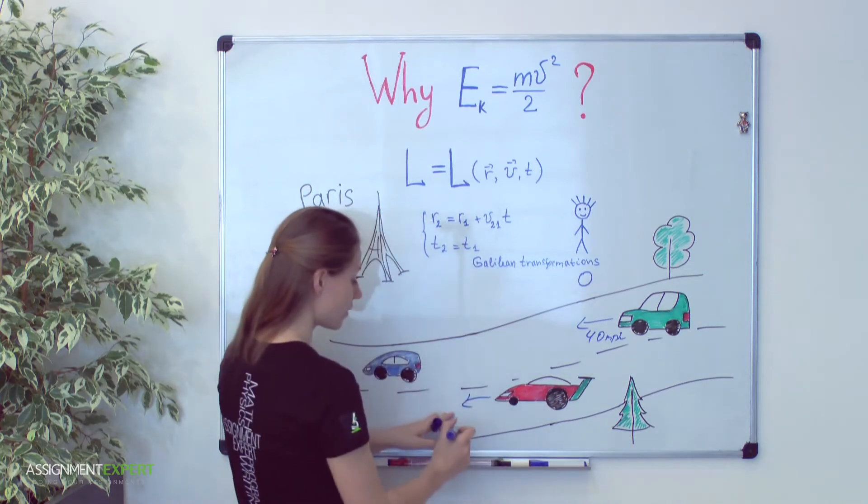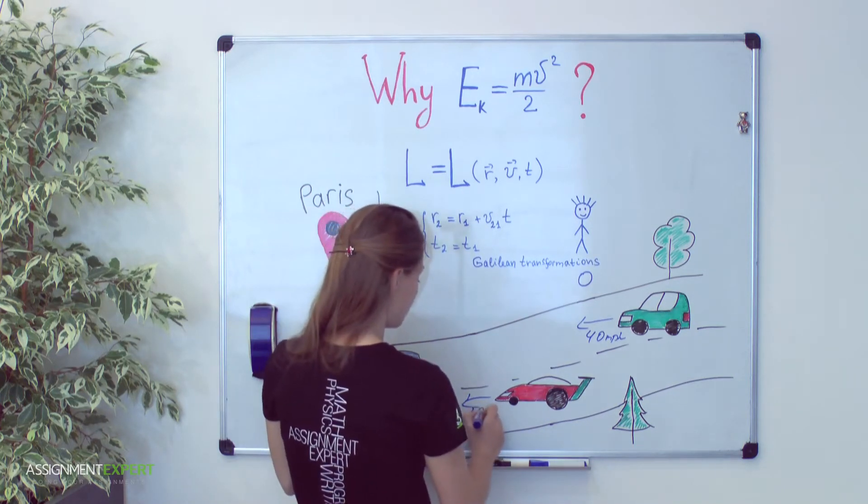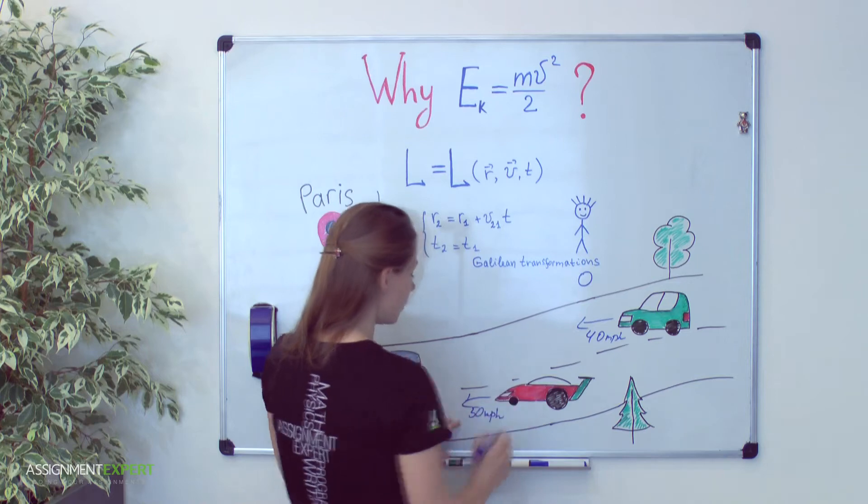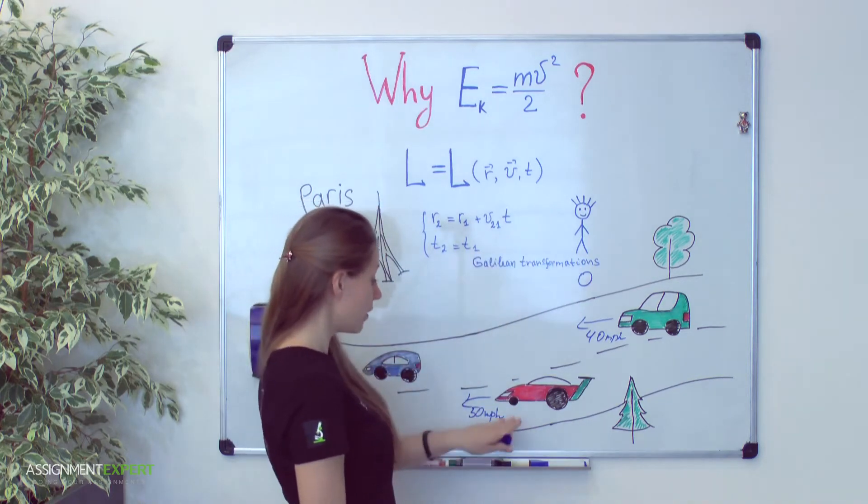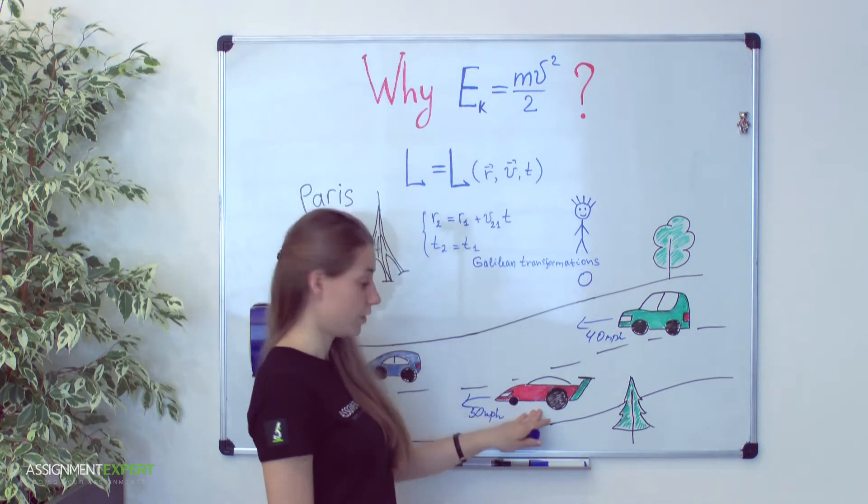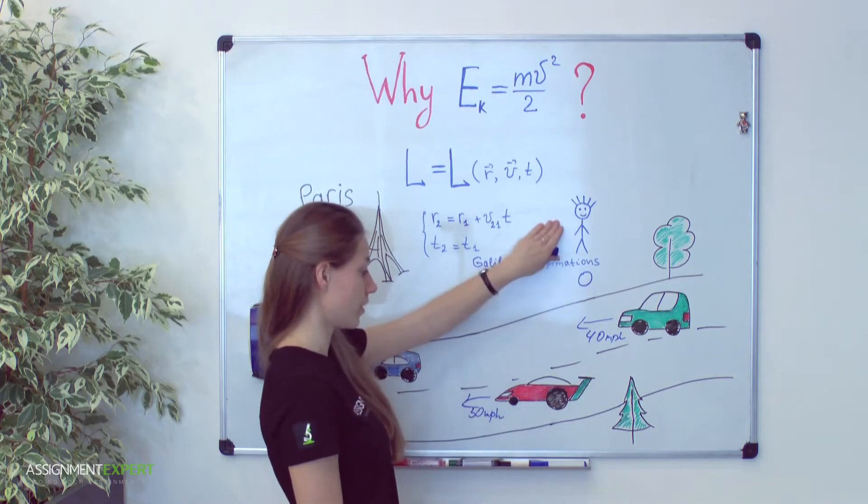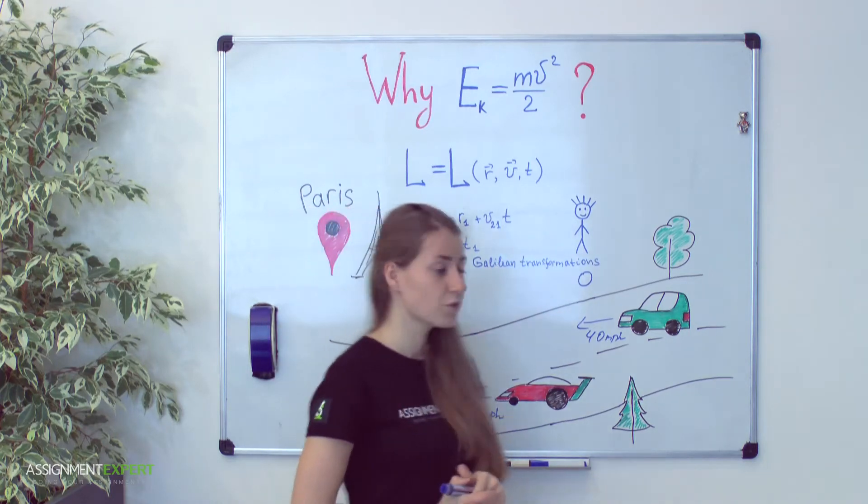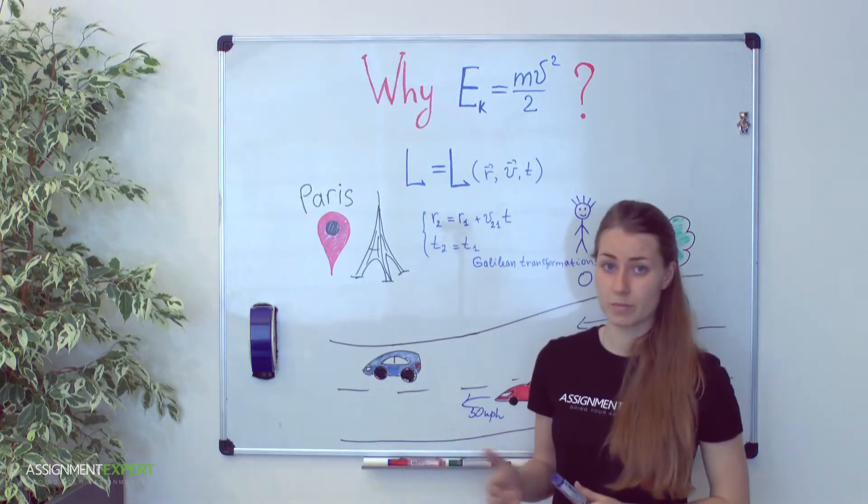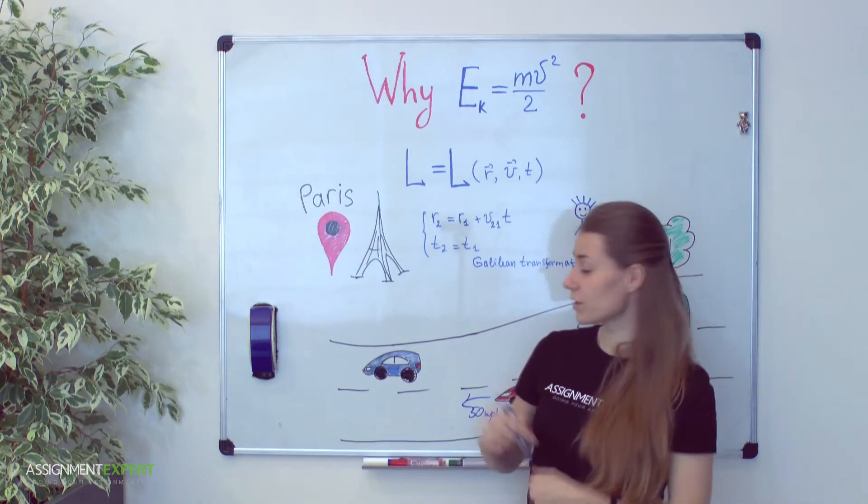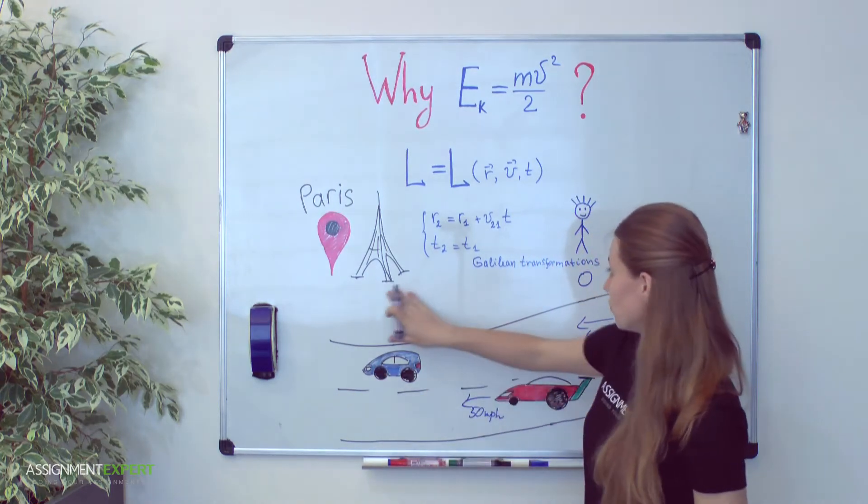Now let's say that our red car moves with velocity say 50 miles per hour with regard to our guy. Then this red car is also inertial reference frame with regard to this boy. We can introduce infinitely many inertial reference frames and measure a distance, for example, from cars to Paris.